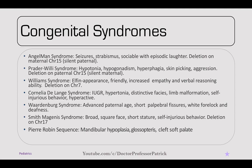Angelman syndrome presents with increased risk of seizures and strabismus. Children appear sociable with episodic laughter, and there's a deletion in the maternal chromosome 15 — the paternal chromosomal arrangement is silenced. Compare that with Prader-Willi syndrome, which presents with hypotonia, hypogonadism, and hyperphagia with skin picking and aggression. Prader-Willi is a deletion on the paternal chromosome 15, and the maternal chromosome is silenced.